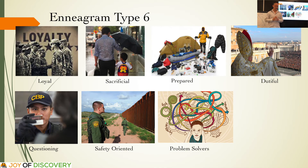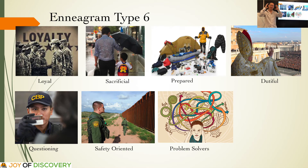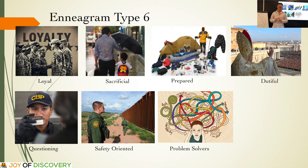Sixes make great problem solvers. They spend a lot of time trying to find answers and certainty to all the questions in their head. Six is the centre of the mental triad — five, six, and seven — so it's a very powerful mind. They can do a lot with their brain as the head of the mental centre. Sixes focus on what could go wrong and what the worst-case scenarios are. At work, they function well in areas such as risk management and safety.